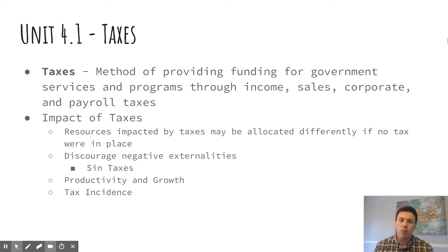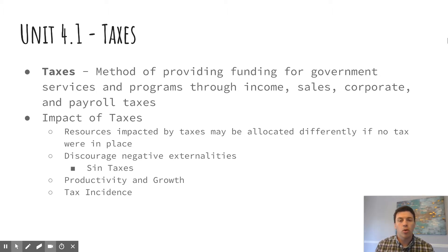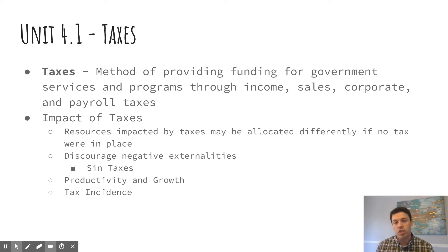For the most part, we're going to focus on the government, mostly in the United States, looking at how the government interacts with the economy. How does it evaluate its success or failure? How does it step in and try to make corrections when there's, for example, a market failure or just negatives going on in the economy? What kind of steps can they take to improve it?